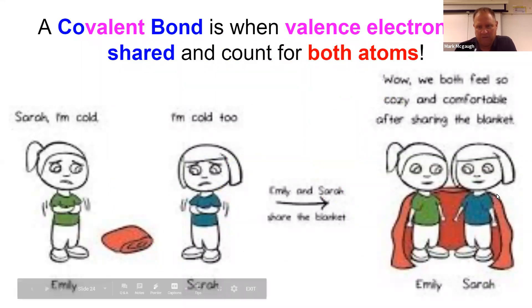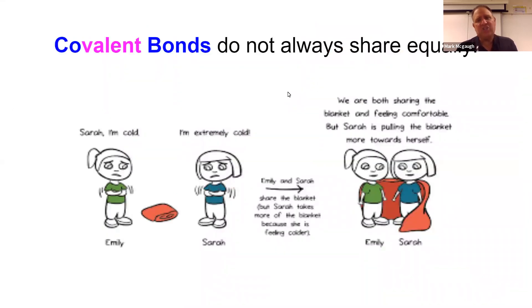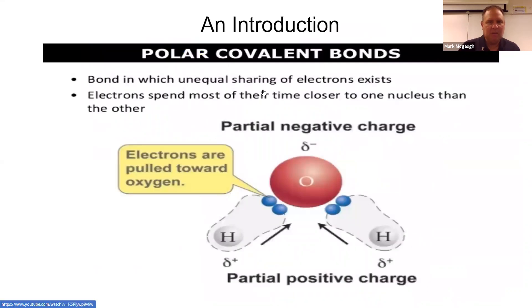Here is a covalent bonding, they're sharing the blanket. Now the sharing is not always equal. Here we see Sarah has more of the blanket than Emily. And that's called a polar covalent bond.